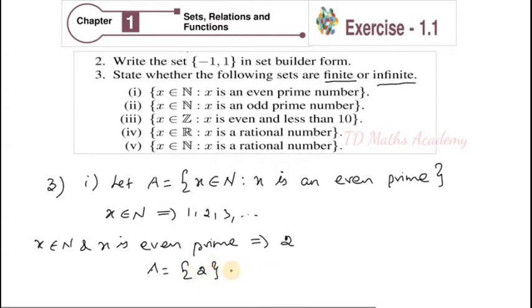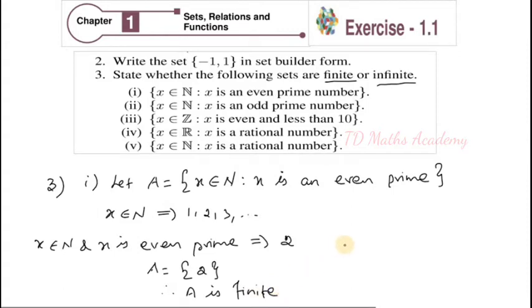So is this finite or infinite? Therefore, A is a finite set. Very good. That is all. Very easy sum. Understand? Next question.